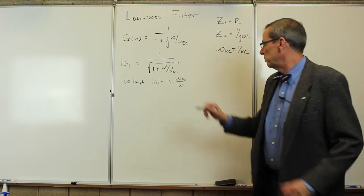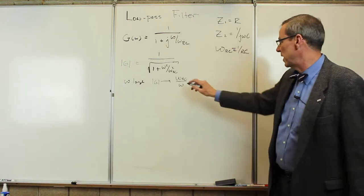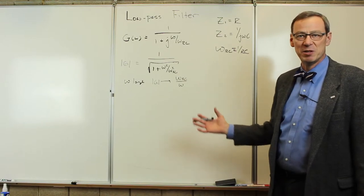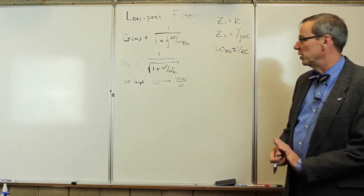Something that falls off with frequency to a power of minus 1, we expect on a Bode plot to have a slope of minus 20 dB per decade. And so that's what we'd expect if we looked at this on a Bode plot.